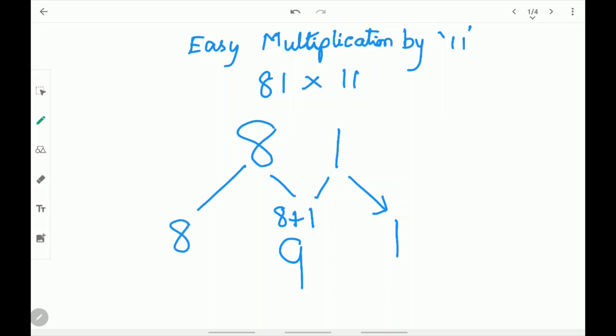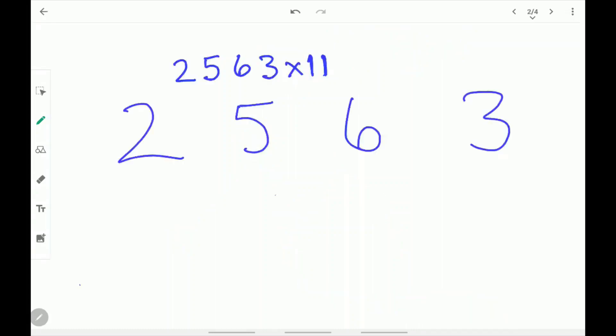The answer for 81 times 11 is 891. Let's try another example.